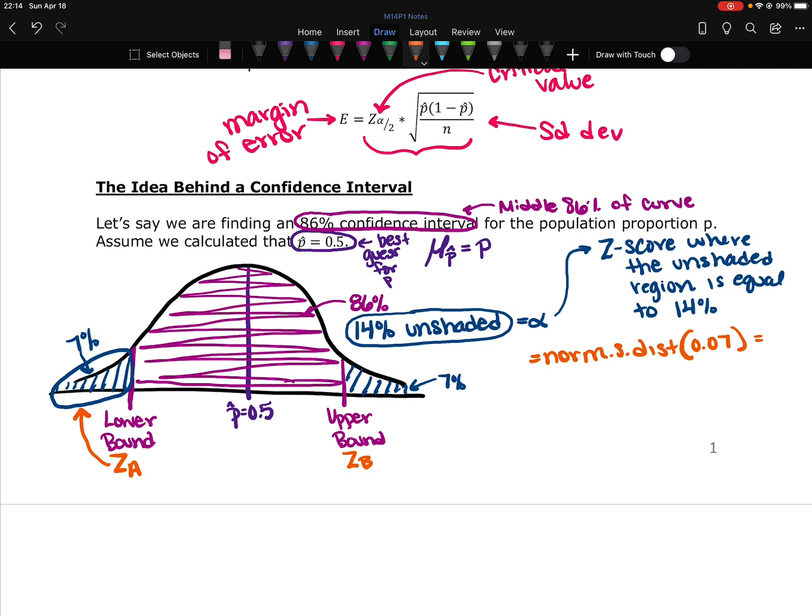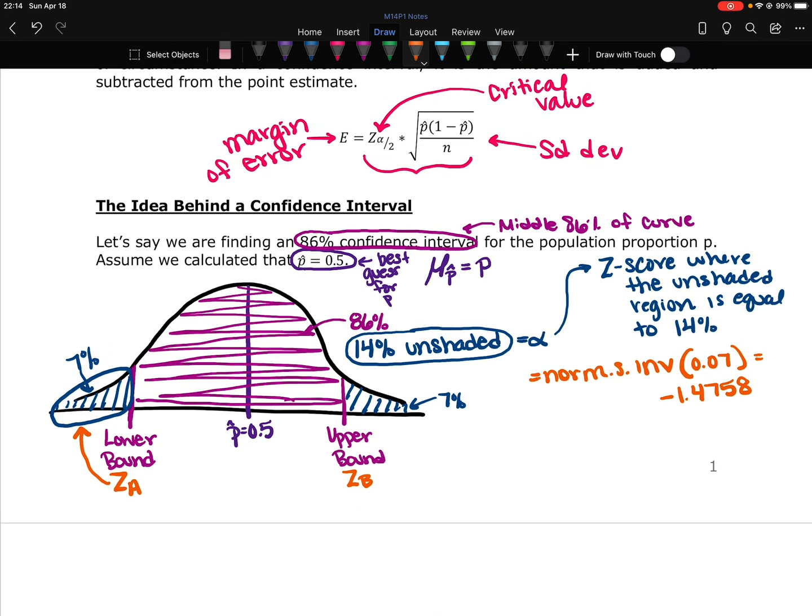So I'm doing this while I'm doing it because I was not prepared. Okay. Oops. Not dist. Hopefully you caught my mistake. Norm.s.inverse. Not dist. Inverse. And we get negative 1.4758. So this is the zA we would have found, and zB would be the same, but negative. And then we go and we multiply that by the standard deviation, and we add the mean. That's basically what we're doing when we find a confidence interval.